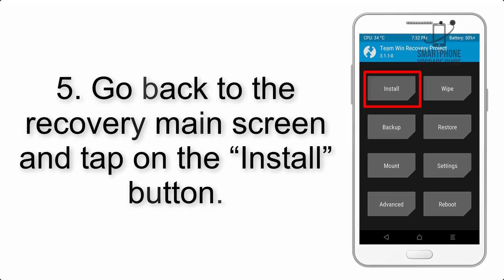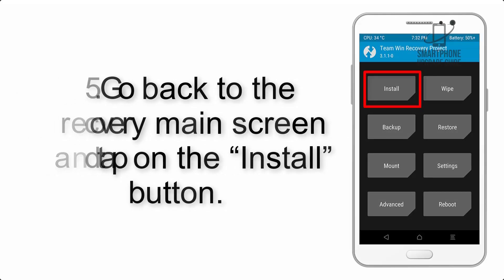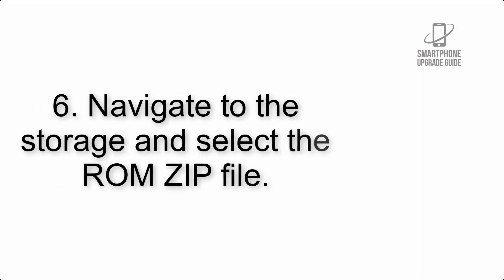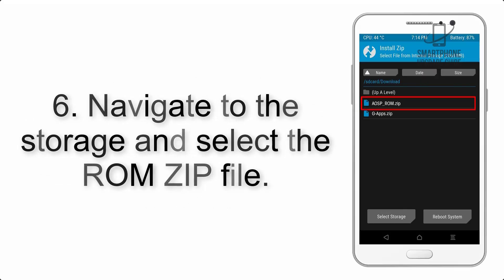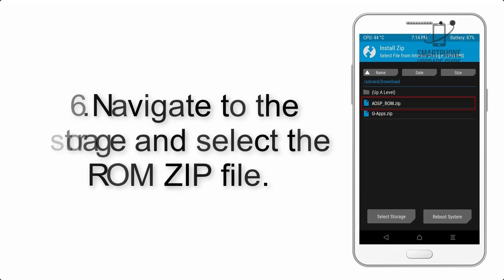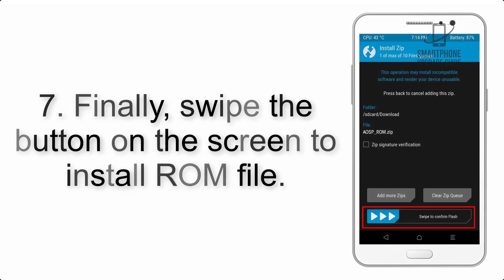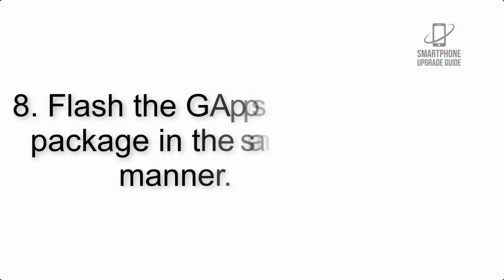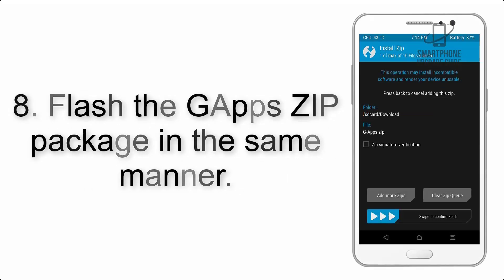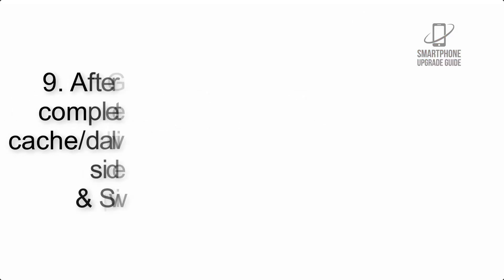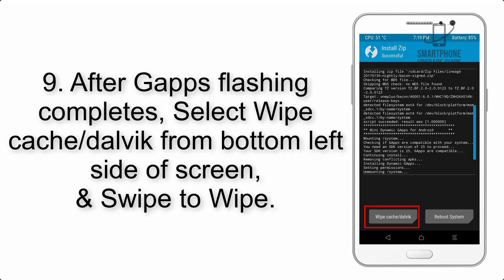Step 4: swipe the button to wipe the device. Step 5: go back to the recovery main screen and tap on the Install button. Step 6: navigate to the storage and select the ROM zip file. Step 7: swipe the button on the screen to install the ROM file. Step 8: flash the GApps zip package in the same manner.